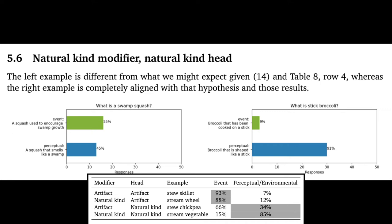Finally, for the natural kind, natural kind cases, we again see something of a mix. Stick broccoli led to lots of perceptual readings, as we'd expect on the essence-related modifier hypothesis. Whereas swamp squash was more mixed with eventive reading slightly in the lead.